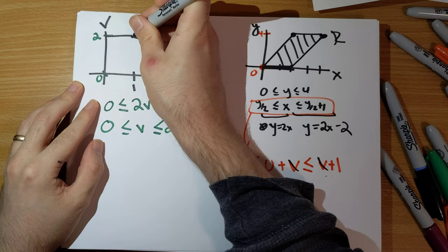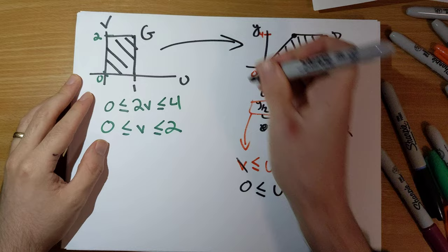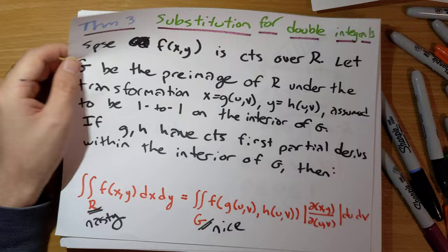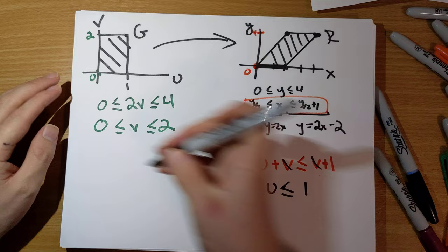And so, hey, look what's going on here. Our region G, the nice region, we managed to come up with a map that sends our nice region to the nasty region. And so, now we're going to integrate over our nice region. So, integrating over the nasty region here, the nice region has very nice bounds.